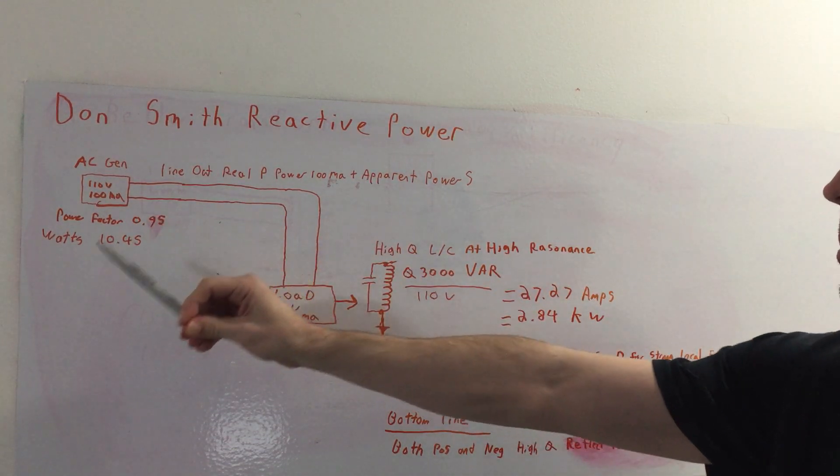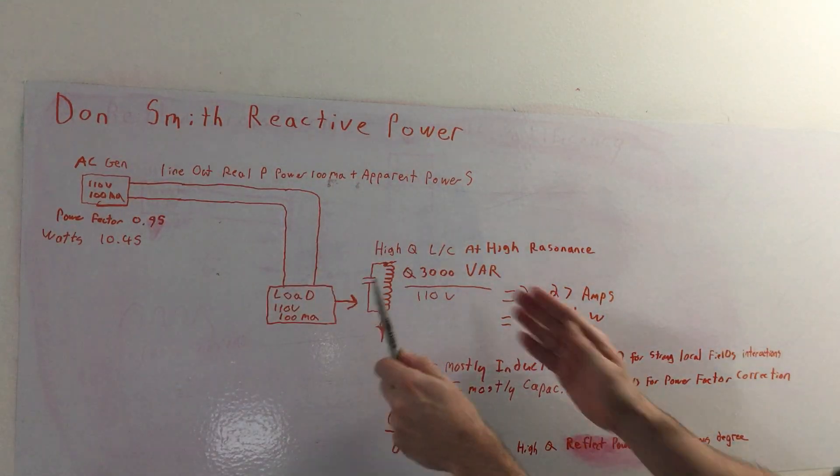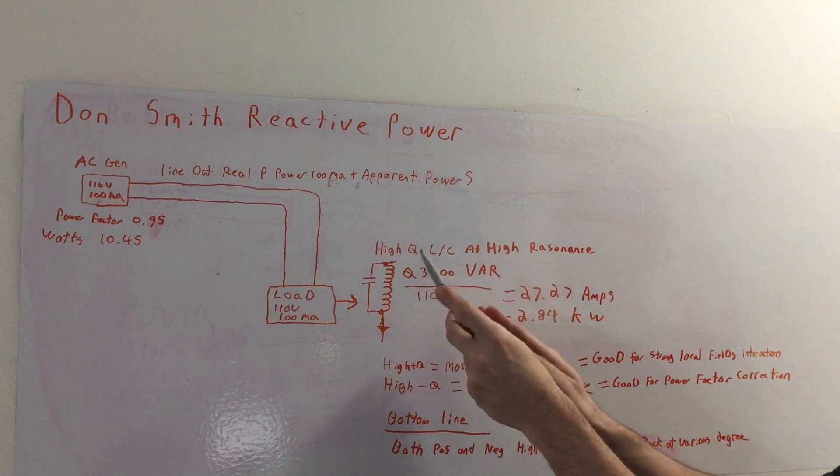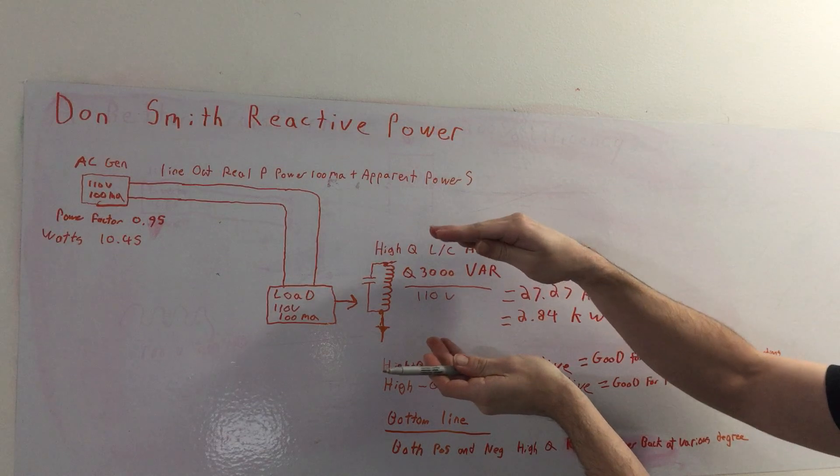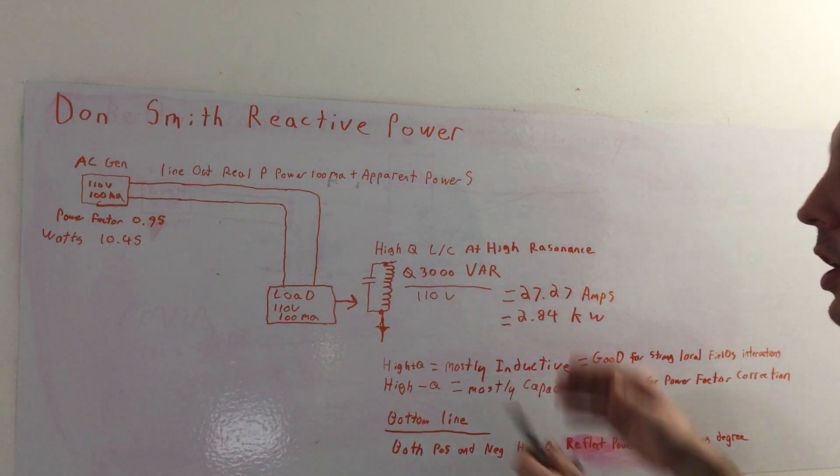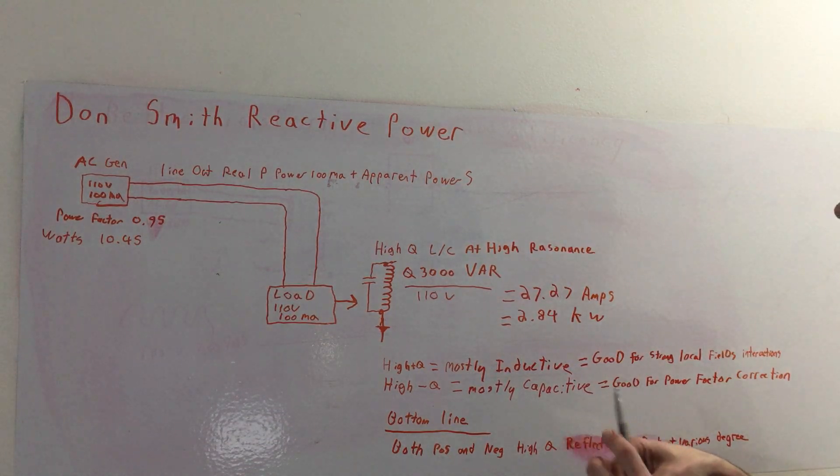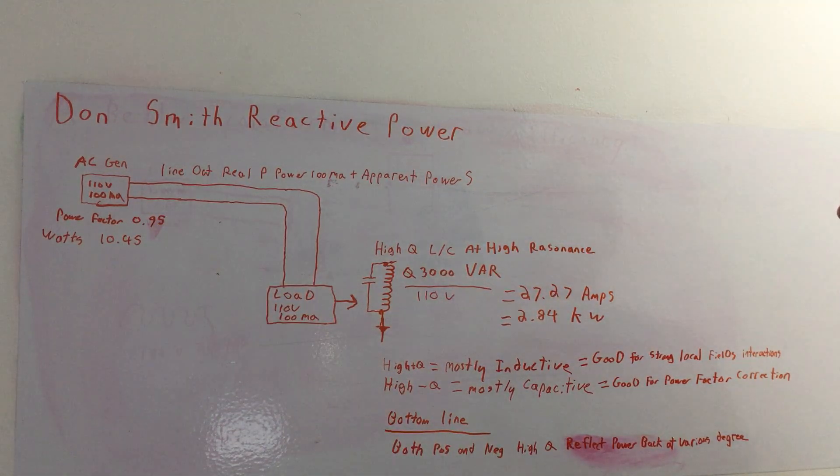And what you end up with is your regular power, your real power, which is 100 mA. Because this system, because it's reactive, can only displace it from one part to another due to its efficiency constraints within its parameters. So whatever values you have, the maximum it will be able to handle is basically 100 mA, if it can do that.